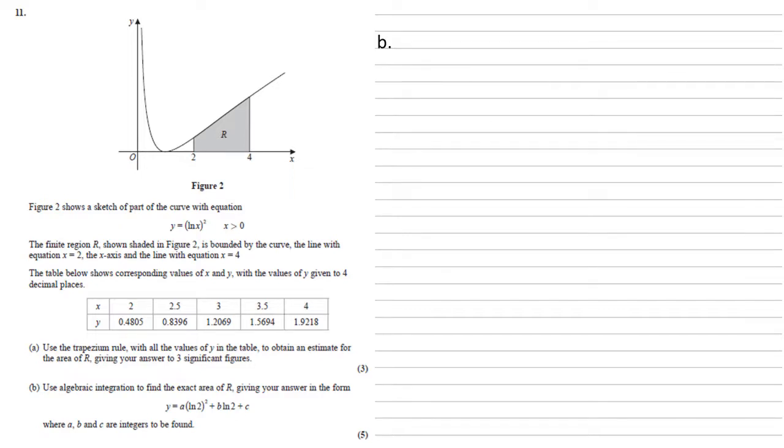For part B, we need to use algebraic integration to find the exact area of R, giving our answer in the form y equals a ln 2 squared plus b ln 2 plus c, where a, b, and c are integers to be found. So the area is going to be the integral between 2 and 4, so then our x values, of ln x squared with respect to x.